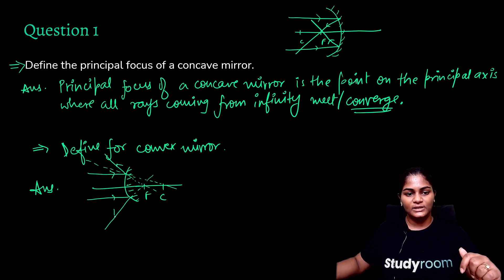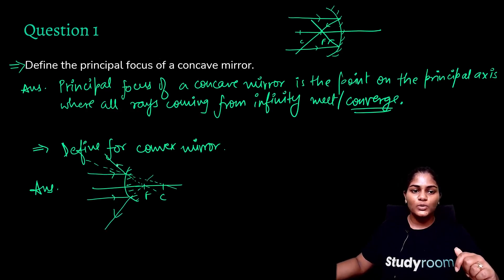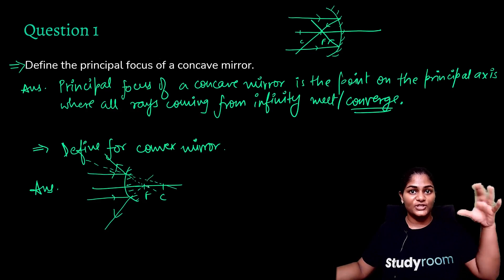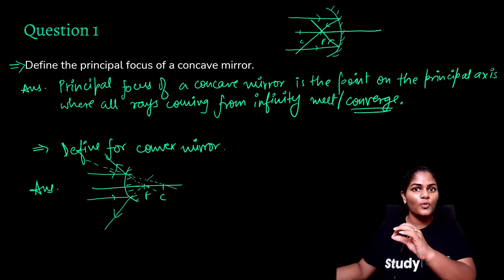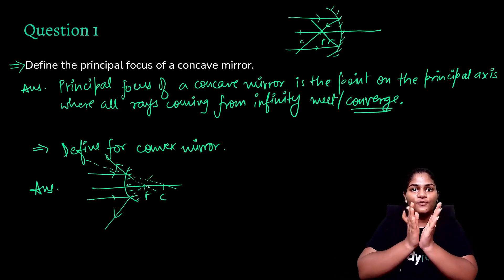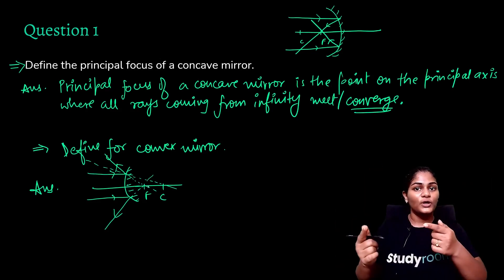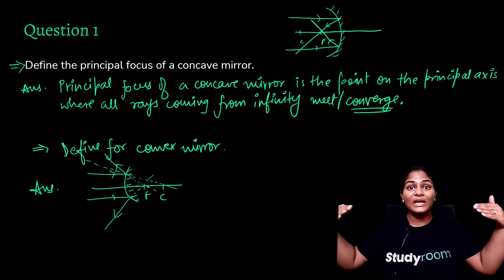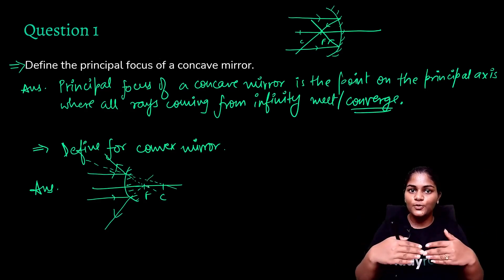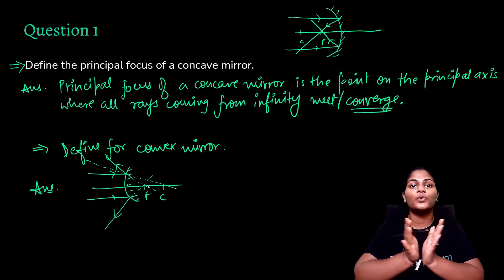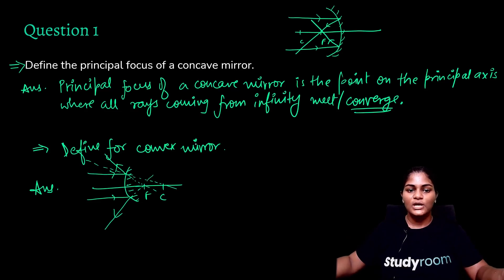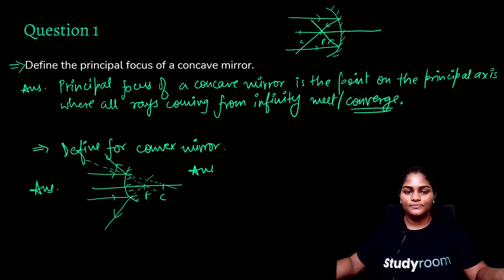So what does it look like? When we back-trace the rays, they seem to meet at the focus. From the focus the rays appear to be going outwards. In case of a concave mirror, the rays seem to be coming inwards and meeting at the focus, but in case of a convex mirror it seems like they're going outward from the focus.